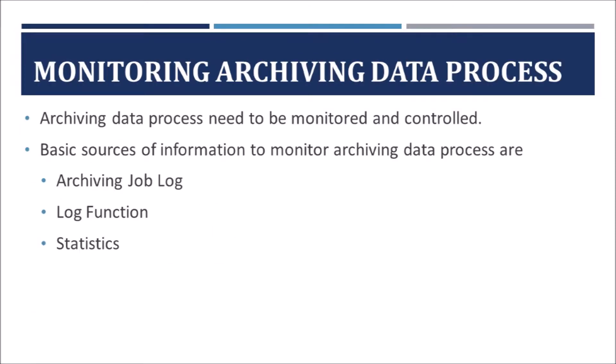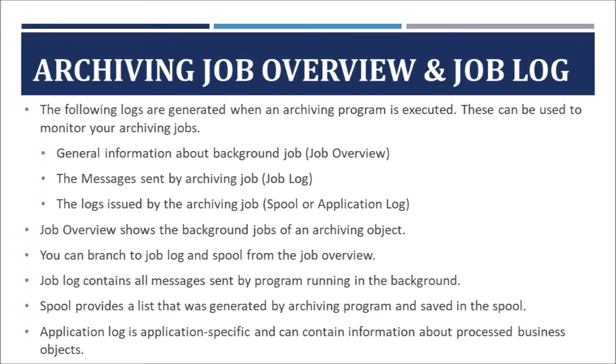After starting the archive process, it needs to be monitored and controlled. Archive logs, statistics, and job logs are the major sources of information used for monitoring. Once write or delete archive programs are executed, these jobs can be monitored using job overview, job log, or spool log. Job overview shows the background jobs executed for an archiving object, and from there you can select a particular job and branch to the job log or spool.